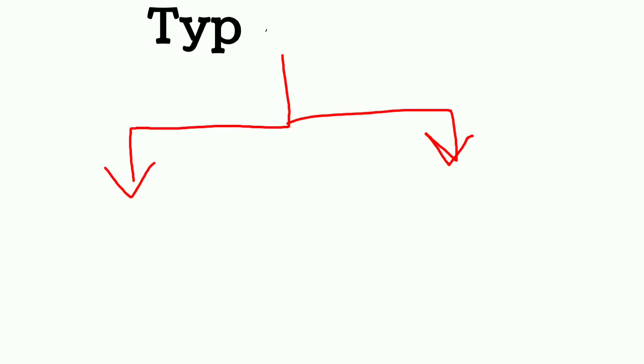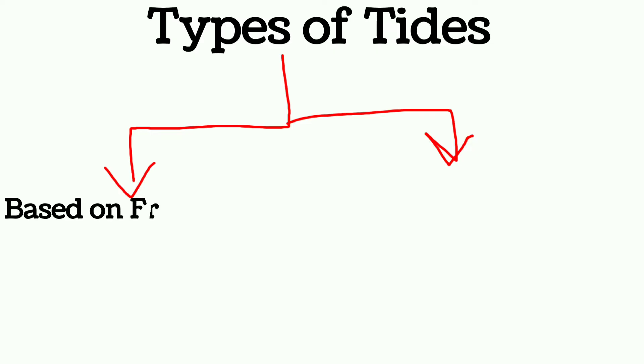The tides are divided based on two types: tides based on the frequency and the tides based on the sun, moon, and earth position. Now let us discuss what are the tides which are based on the frequency.